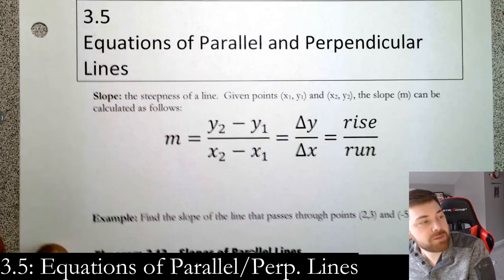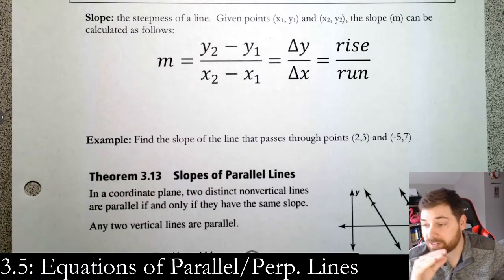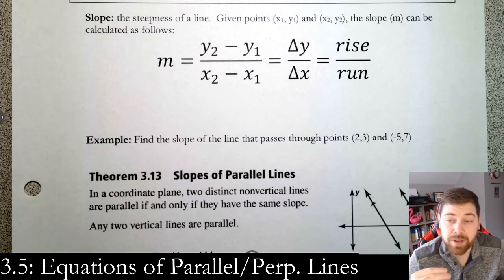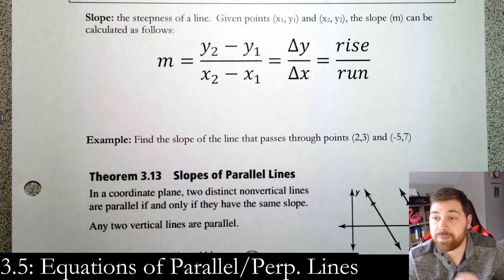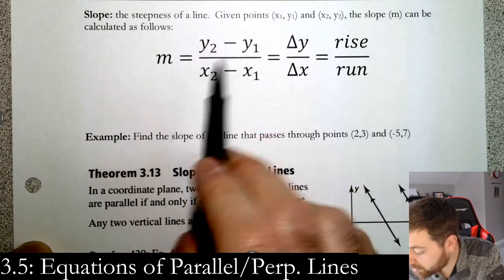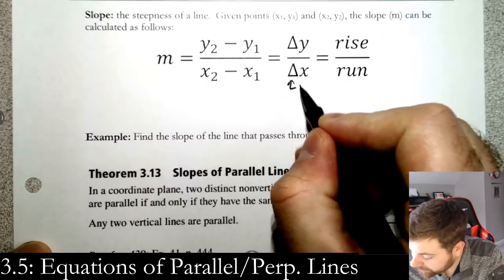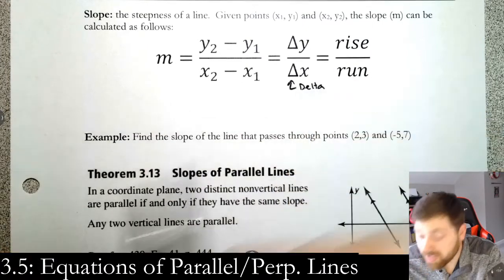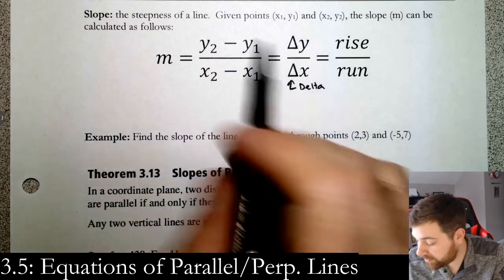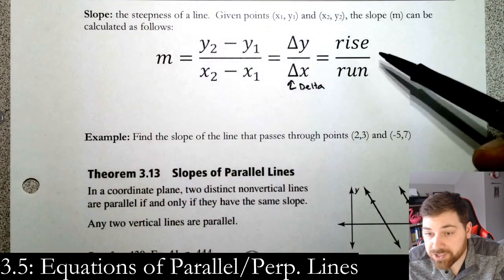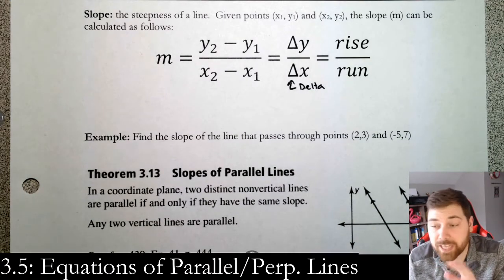Let's talk about slope. Slope is the steepness of a line. The equation is y2 minus y1 over x2 minus x1. You've also seen this shape, delta, which represents change—change in y over change in x, which is what the difference is here. Or you hear rise over run. These are all ways that you see slope written. You've done this many times before.